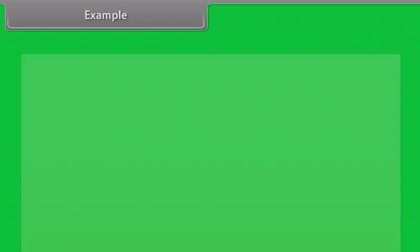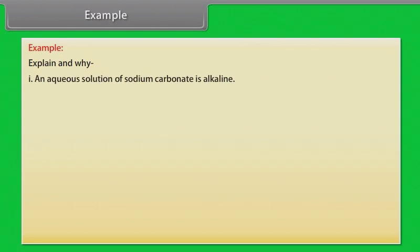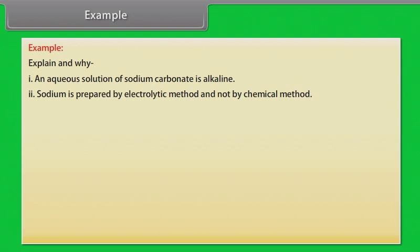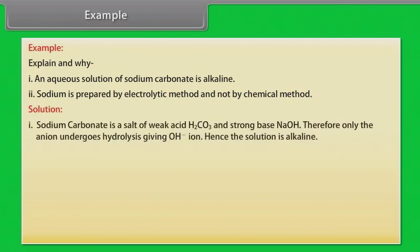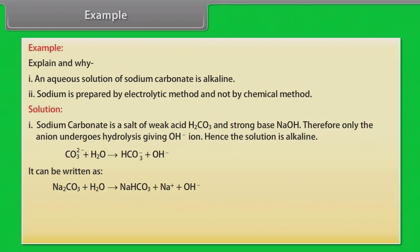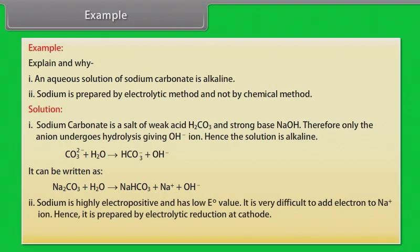Example: why is an aqueous solution of sodium carbonate alkaline, and why is sodium prepared by an electrolytic method and not by a chemical method? Sodium carbonate is a salt of weak acid H₂CO₃ and strong base NaOH. Therefore, only the anion undergoes hydrolysis, giving OH⁻ ions. Hence the solution is alkaline. Sodium is highly electropositive and has a low E⁰ value. It is very difficult to add an electron to Na⁺ ions. Hence it is prepared by electrolytic reduction at the cathode.